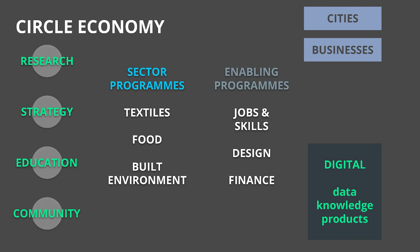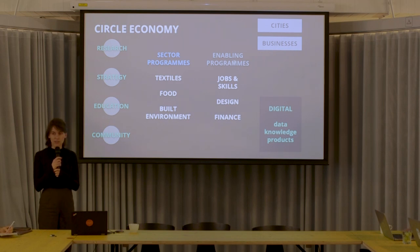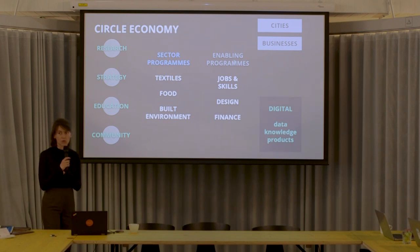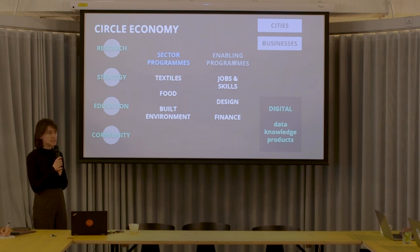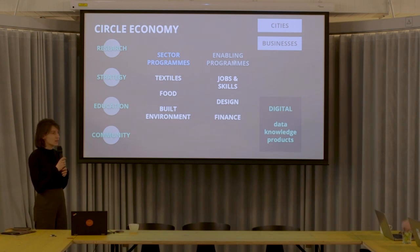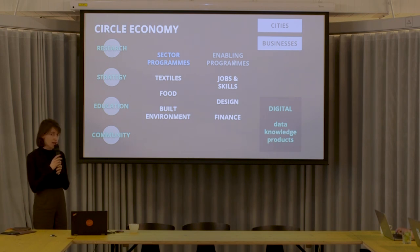We do a variety of different types of work. We do novel research for circularity, we help create strategies for businesses and cities, we offer workshops and do capacity building in businesses and cities, and we also act as an ecosystem builder to bring organizations together. Internally we're organized into sector programs — textiles, food, and built environment — and enabling programs like jobs and skills, finance and business models, and design and brands.